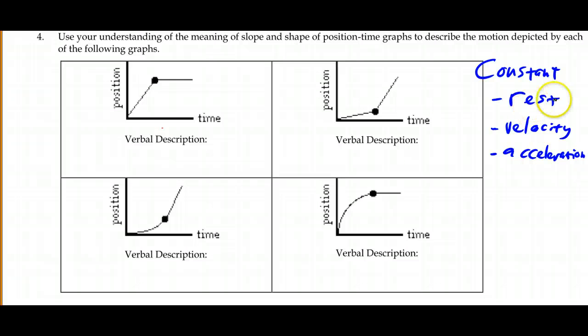A rest will show up as zero velocity, which means the slope will be equal to zero, so the line will be flat. Some kind of constant velocity, it has to be linear, it has to be a line. And then the acceleration has to be some kind of parabola, so some kind of second order curve.